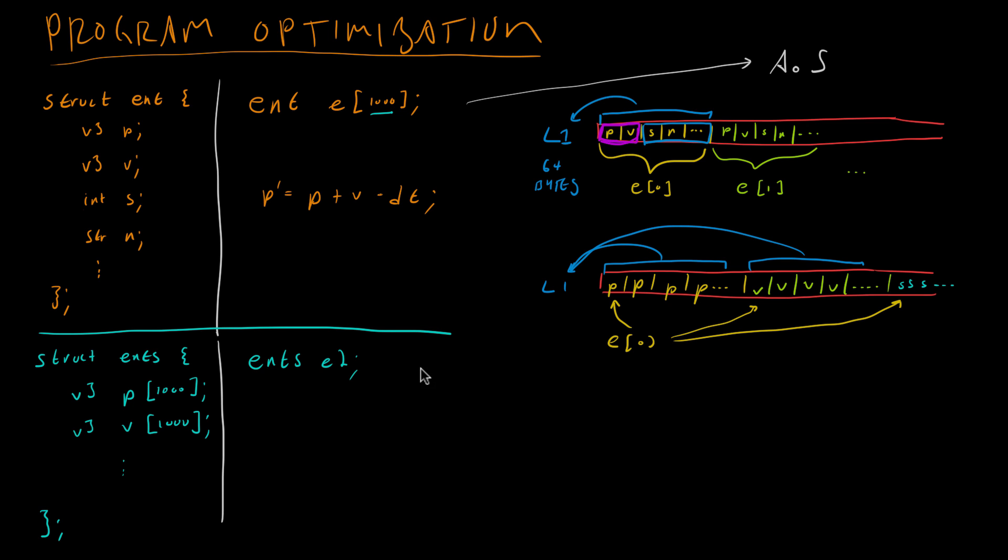This way also has a name, it is called structure of arrays, SOA. So this is the first advantage for doing it this way, we use the entire cache line that we pull into memory, all 64 bytes. There are three advantages of doing this.